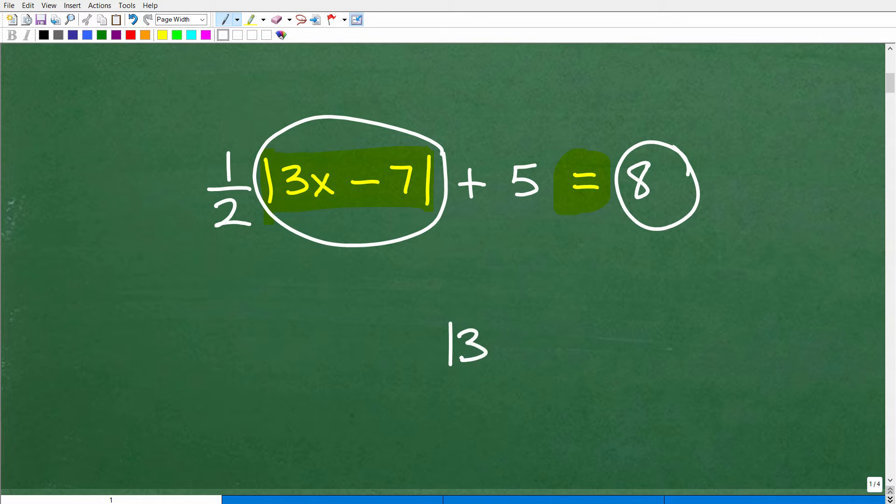So in other words, we want to get this down to something like this. 3X minus 7, absolute value 3X minus 7 equals, oh, I don't know, let's say 12.